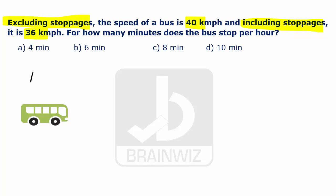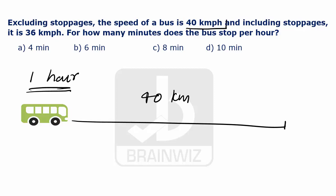Now, let us try to assume that the bus is going to travel one hour, that is 60 minutes. In this one hour, when there are no stoppages, the bus will travel to the distance of 40 km. This 40 km, it is going to travel excluding stoppages, means without stoppages.